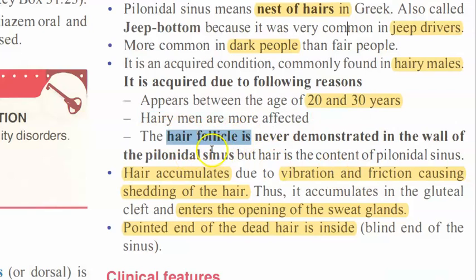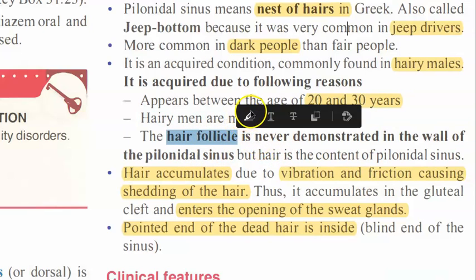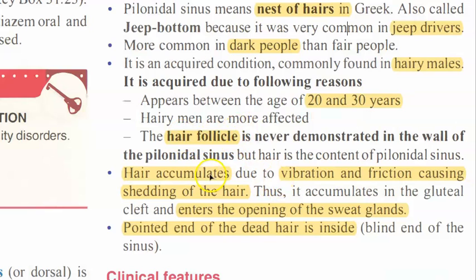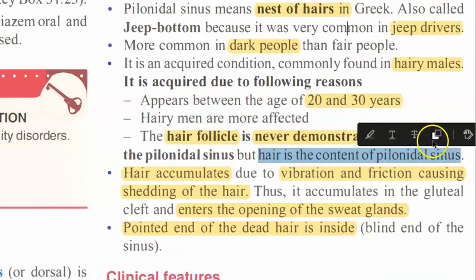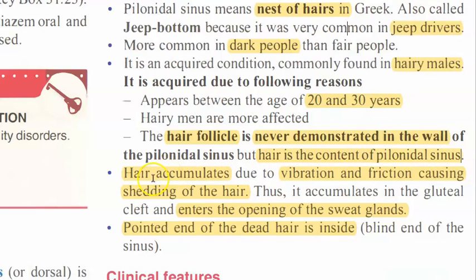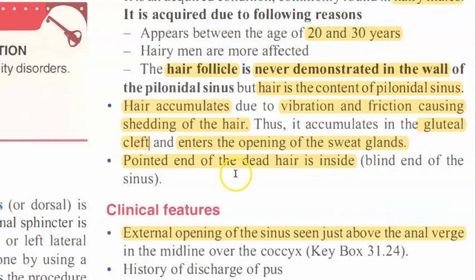Importantly, you will never see a hair follicle inside the sinus - hair follicle is not demonstrated. But you can demonstrate hair inside the pilonidal sinus. The hair comes from around the sweat gland. Hair accumulates due to vibration and friction, which causes shedding. This shed hair accumulates in the gluteal cleft, gets stuck between the two buttocks, enters the sweat gland, and the pointed end of dead hair will be found inside.